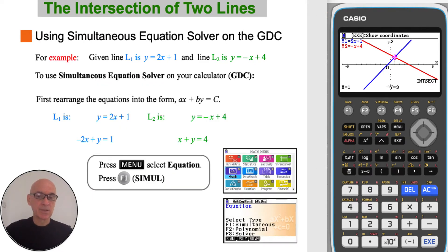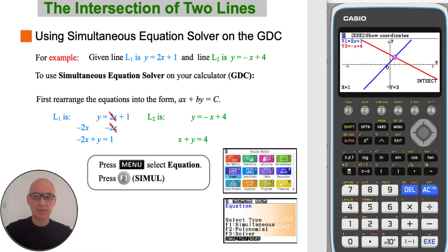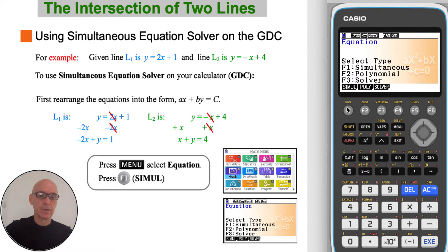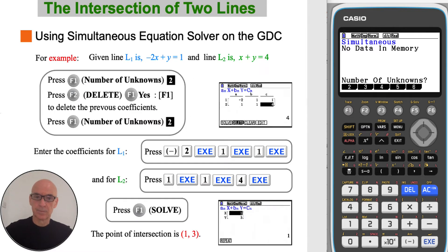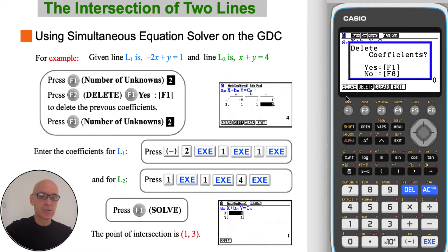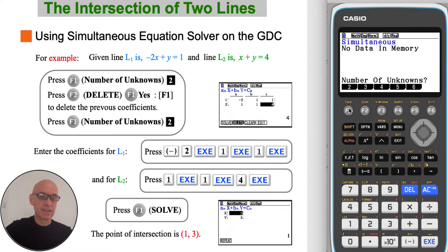To use the simultaneous equation solver to find the point of intersection of the two lines, we first need to rearrange the equations into the form AX plus BY equals C. So for line L1, subtracting 2X from both sides, and for line L2, adding X to both sides. Then on the calculator press Menu, select Equation, and then press F1 for simultaneous equations, and F1 again for two unknowns.